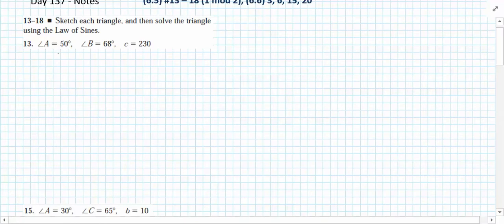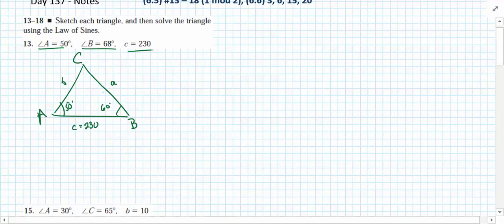But here in number 13 we can still sketch this picture. We're starting with a triangle that has an angle of A and an angle of B and a side length C. So I'm just going to draw a triangle here. I'm going to label angle A in one corner to be 50 degrees. I'm going to draw angle B to be 60 degrees. And C then would be 230 units.